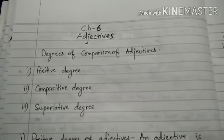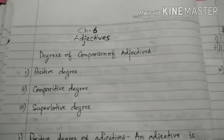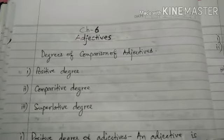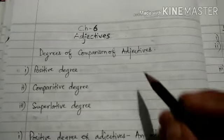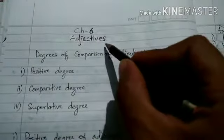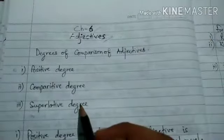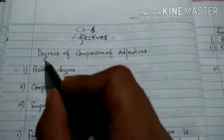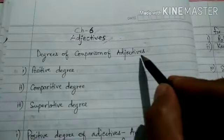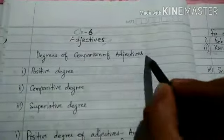Hello, my dear students. Welcome to CMIS online classes. In today's class, for the students of standard 7, we will continue with chapter 6 of our English grammar, that is adjectives. And in this video, we will understand the degrees of comparison of adjectives.